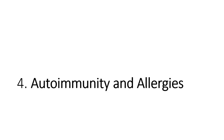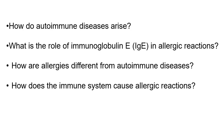Next section: autoimmunity and allergy. How do autoimmune diseases arise? Autoimmune diseases occur when the immune system mistakenly attacks the body's own tissue, failing to recognize it as self. What is the role of immunoglobulin E (IgE) in allergic reactions? You can also get questions on the roles of IgG, IgA, and other immunoglobulin types, their differences, and why they exist.